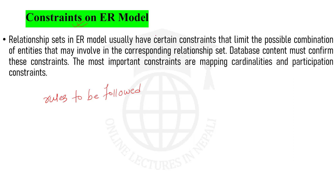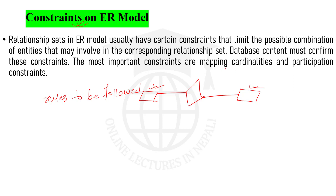While talking about the ER model, a relationship set — represented by a diamond shape — is the association between two different entities. When there is an association between entities, that is called a relationship. The association between two entity sets is called a relationship set, and those relationship sets in the ER model usually have certain constraints that limit the possible combinations of entities.